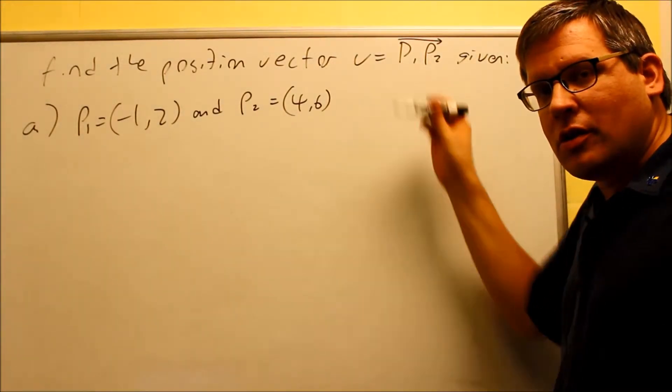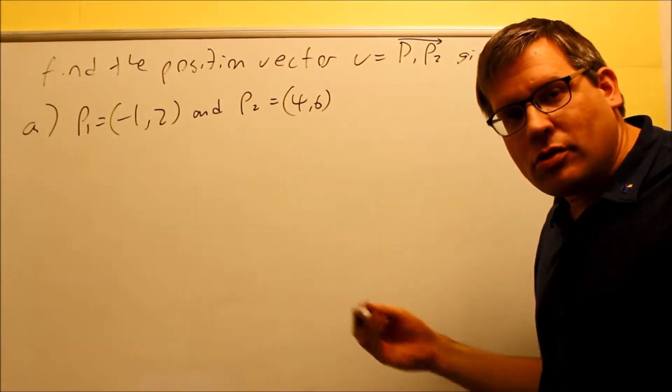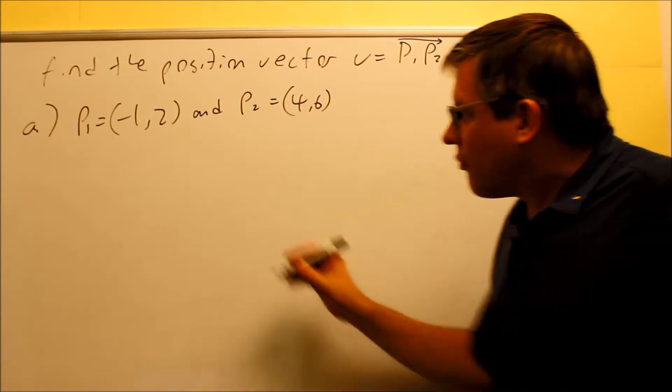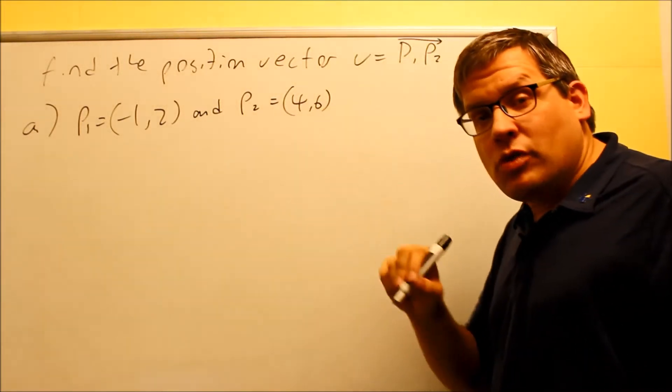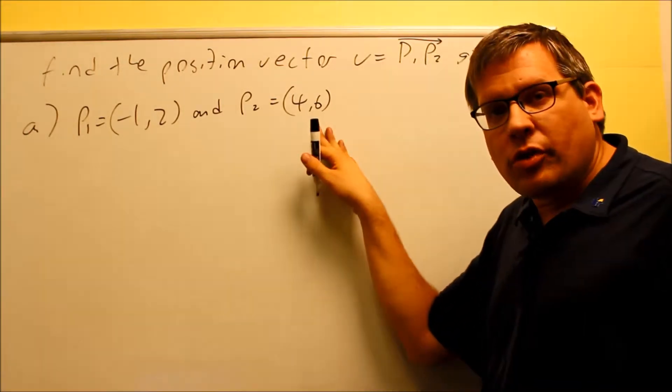And recall that we just talked about that there's a formula that allows you to take this and turn it into a position vector. So the formula for this would be X2 minus X1 and Y2 minus Y1. Let's go ahead and label these, the points that are given.